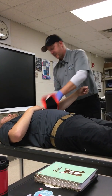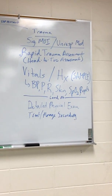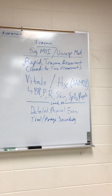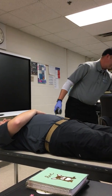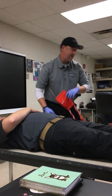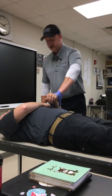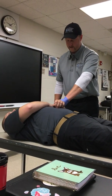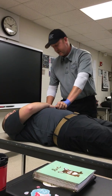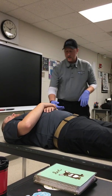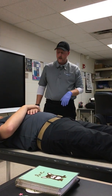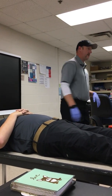We'll go ahead and get the cuff on and the stethoscope in. Once we pump it up, the scenario vital signs are: blood pressure is 100 over 60, pulse rate is 110, respirations are 24. Skin color, temperature, and condition: pale, cool, and clammy — as we identified earlier. Pupils are equal and reactive to light.